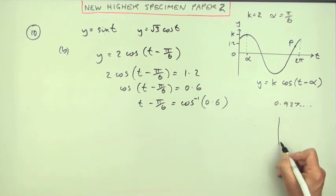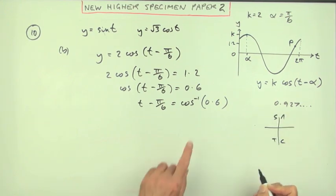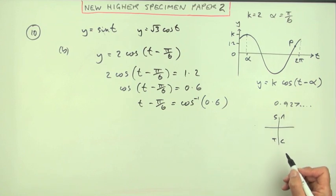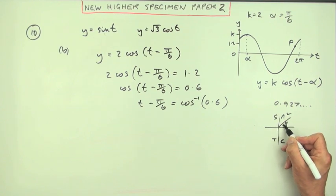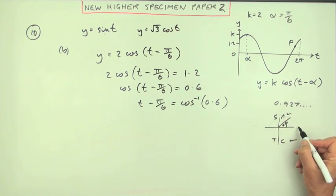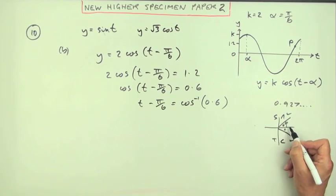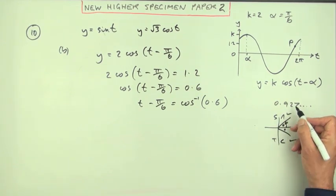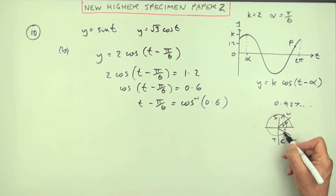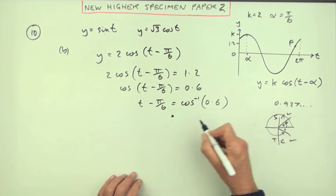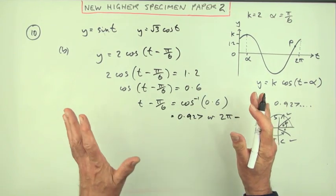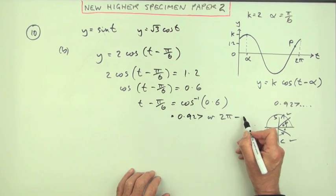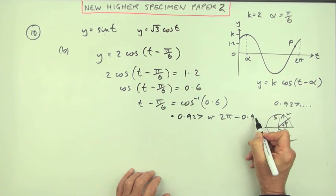Now you can use your CAST diagram if you like. All sine tan cos. That cosine was positive, so this angle is either in the first quadrant or the fourth quadrant. It's either this amount ahead of 0 or it's this amount behind it, which means it's that amount short of all the way around. It's that amount short of 2 pi. So your two answers will either be that 0.927 or it will be 2 pi, remember if you're in radians so 2 pi for the complete turn, minus 0.927.